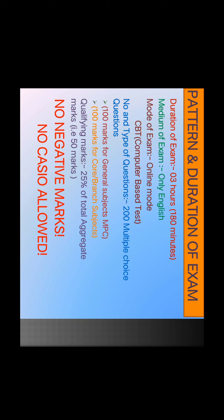We have multiple choice questions. There are 100 marks for general subjects — MPC, that is Mathematics, Physics and Chemistry — and the remaining 100 marks for core branch subjects, covering Civil and Electrical branches. The qualifying marks are 25% of total aggregate marks of 200, that is 50 marks. For CST, we have a qualifying mark. There are no negative marks and no calculator allowed.